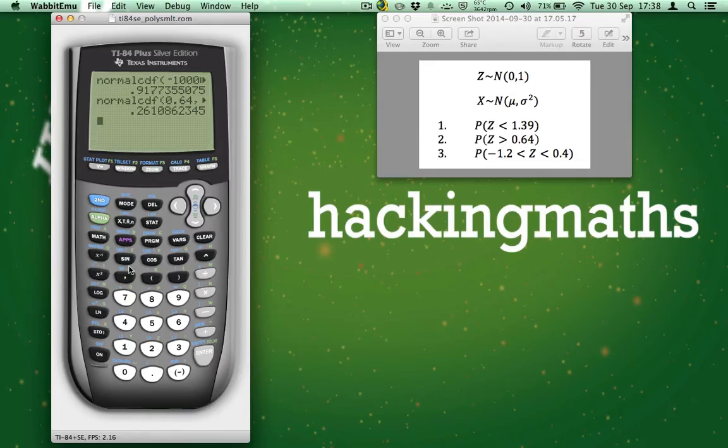So far, we have calculated the area above and the area below. But what about the area between two values? I think you might be able to figure this one out yourself. Here, in our third example, we're working the probability that minus 1.2 is less than z, less than 0.4. Why don't you pause the video and give it a try yourself? Go on, pause it and give it a go.